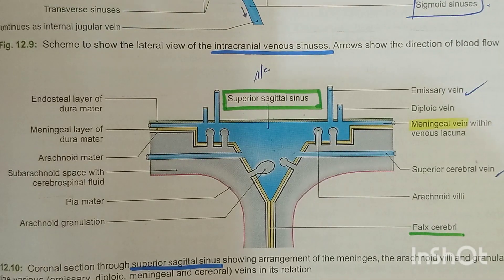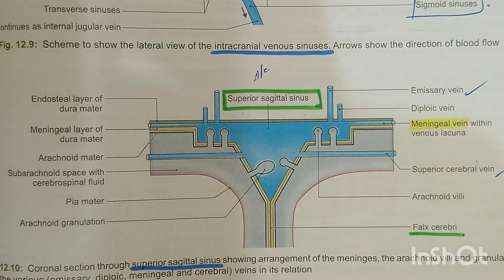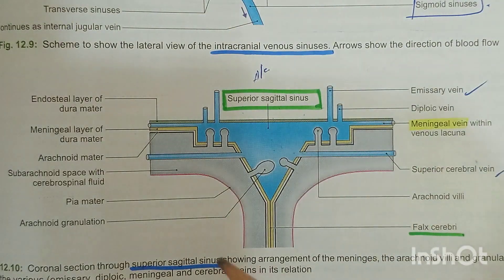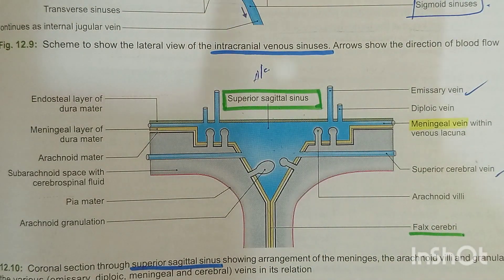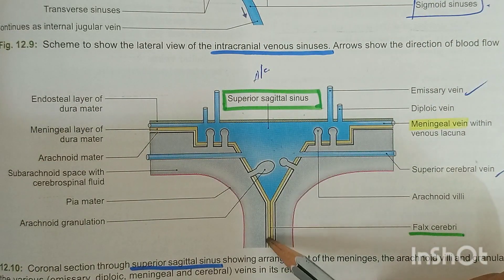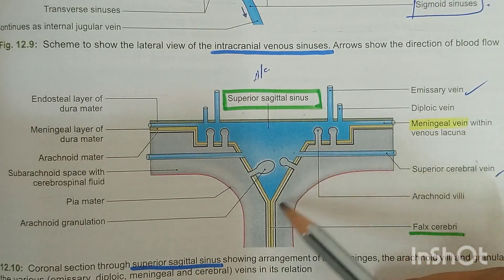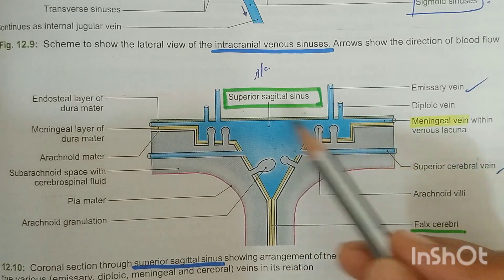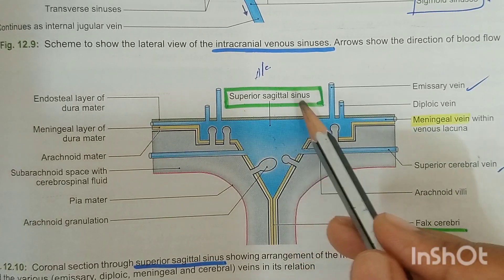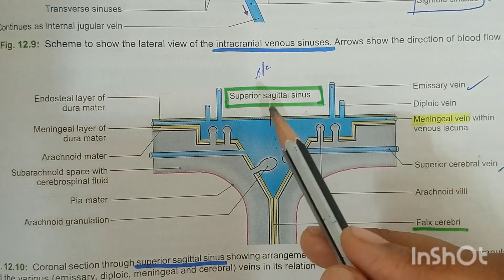Hello everyone, this is MBBS Gallery. Today I came up with an important topic: the superior sagittal sinus. The superior sagittal sinus is the sinus present between the falx cerebri. Here the yellow markings — these two lines — indicate the falx cerebri, and in between the falx cerebri there is a sinus called the superior sagittal sinus.